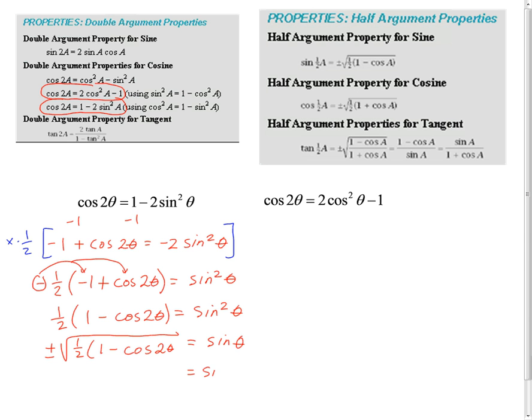on this side, I'd have the sine of 1 half a. And on the other side, I'd have plus or minus the square root of 1 half times 1 minus cosine. Now, if it's 1 half a on the right-hand side, and the one on the left-hand side is supposed to be twice as big, then I would have, that would be a. So you can write it either way, but this is the way it would be written if you want to call it a half argument property or half angle property.